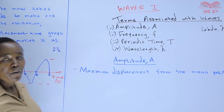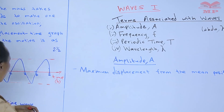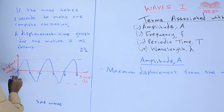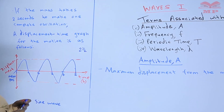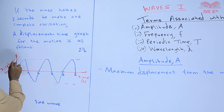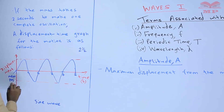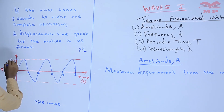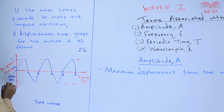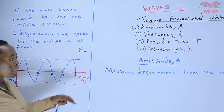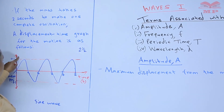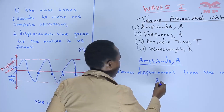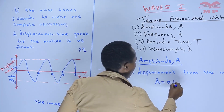It is the maximum displacement from the mean position on either side. In our wave here, this is our mean position. Our maximum displacement means the highest point on either side. If our displacement is in meters, we have 0.1 here and negative 0.1 on the other side. So the displacement from the mean position is 0.1, and that is the amplitude — 0.1 meters.